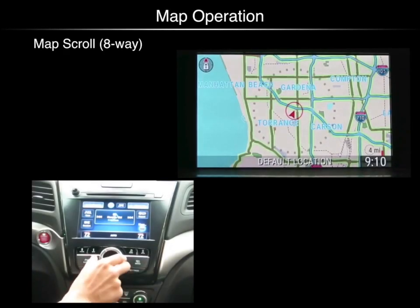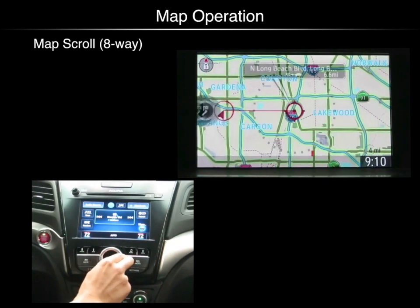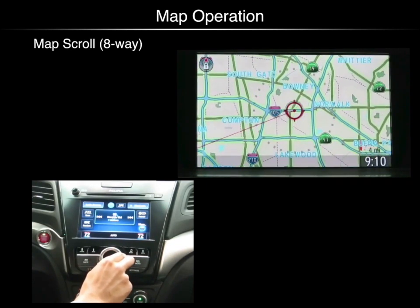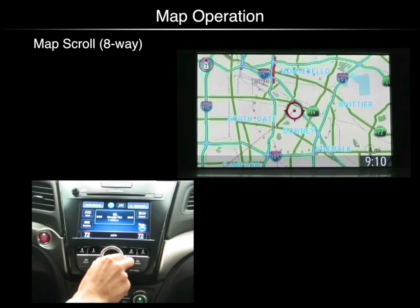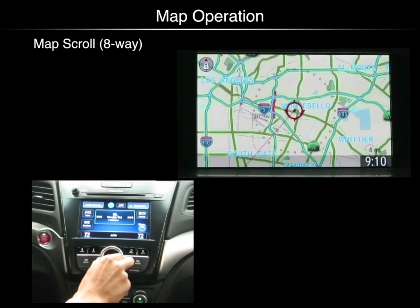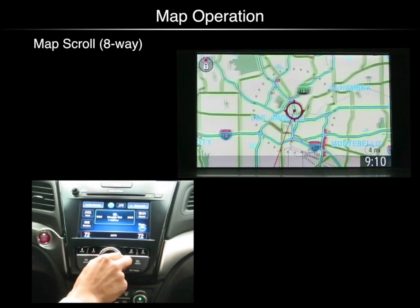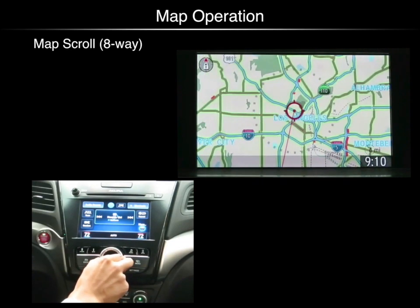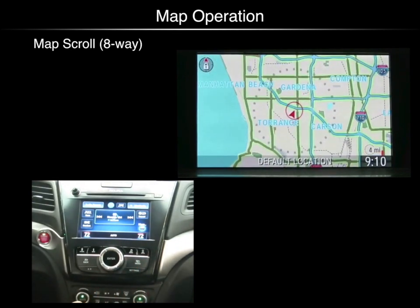You can reorient the map view using the interface dial. You can toggle to the right, or push it at an angle. Push it up to scroll upwards on the display, or to the left. A press of the app button centers the display on your current location.